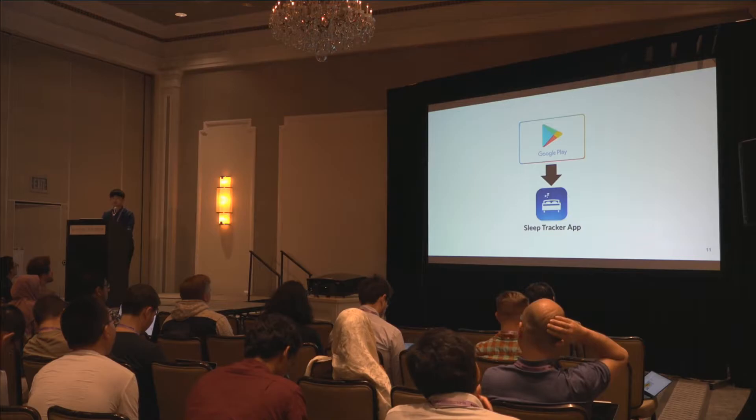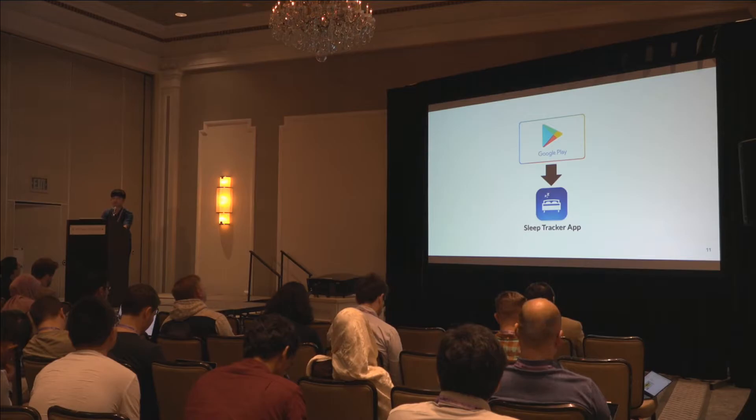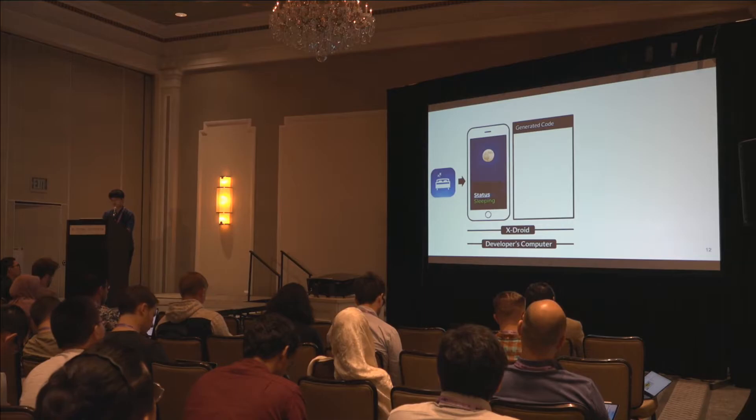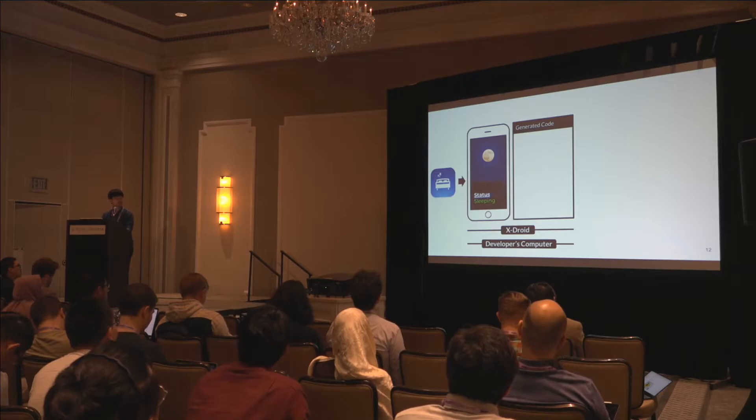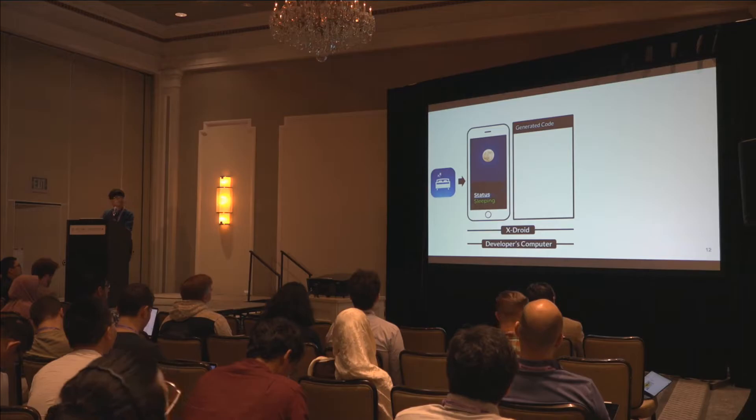Let me explain each step in detail. The first step — downloading — is straightforward. All you need to do is download an app from Google Play or other app markets. One important thing to emphasize: you don't need source code access. All you need is just an APK file. When you provide that APK to our development tool, it shows you an emulator where the Sleep Tracking app is running. On that emulator, you can click, swipe, and navigate to the sleep tracking status screen, and our tool records your actions as programmable Java code.